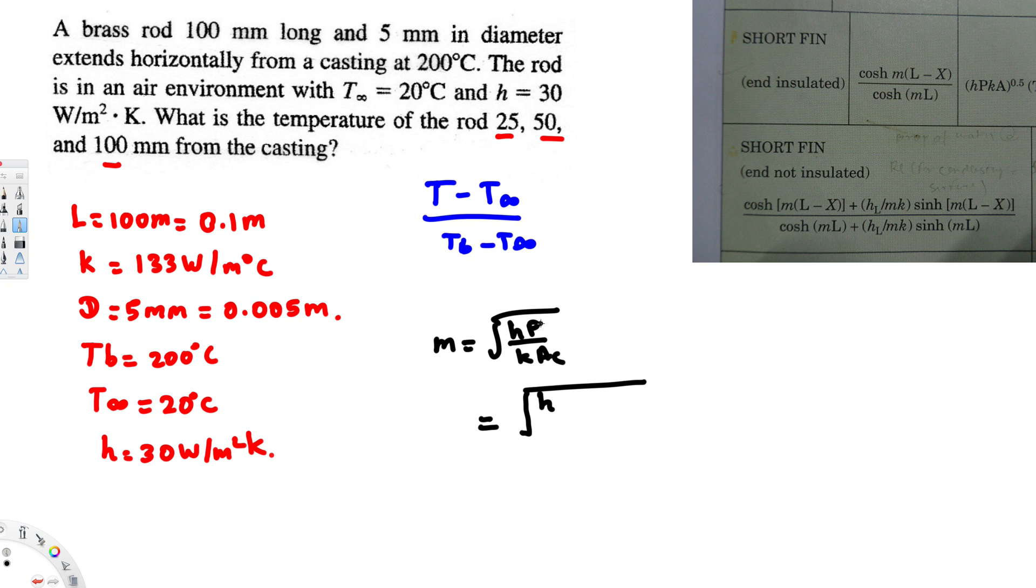Let's put the equation. We have h and perimeter of the circle is 2 pi r, or you can say pi d. Pi d is better because we have diameter already. So pi d, then thermal conductivity times cross-sectional area of a circle is pi d squared over 4.